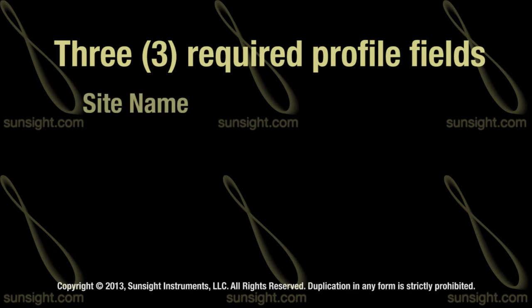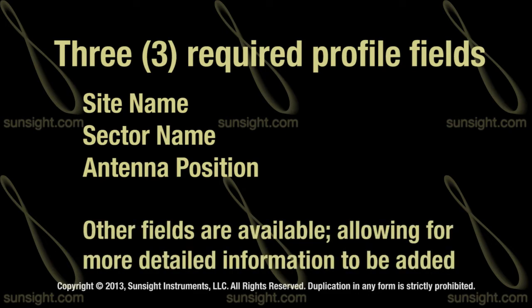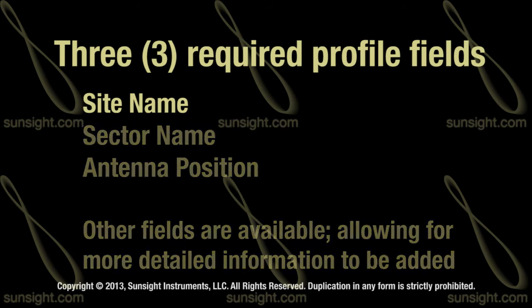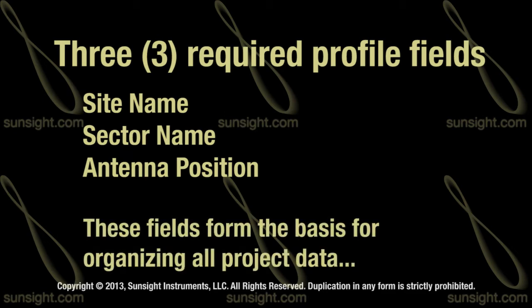There are three important pieces of information that must be entered into the AAT when creating profiles: site name, sector name, and antenna position. There are many more fields available to add as much information as you'd like, but the main three are site name, sector name, and antenna position. Those are the fields that will help you organize all of your project's data.